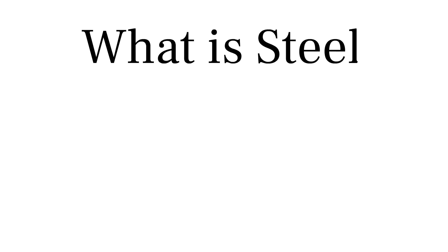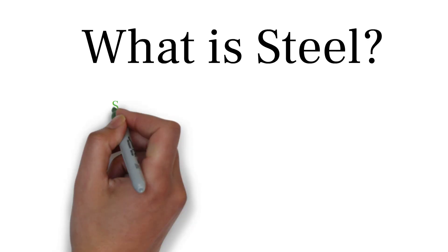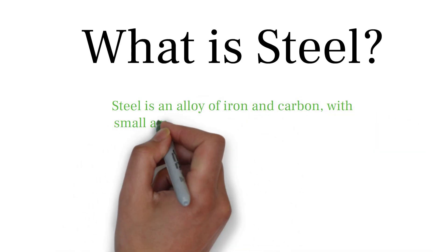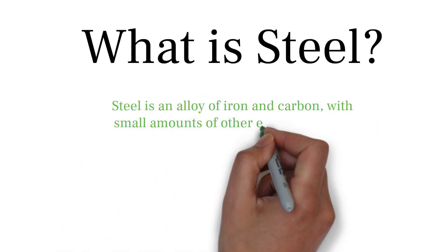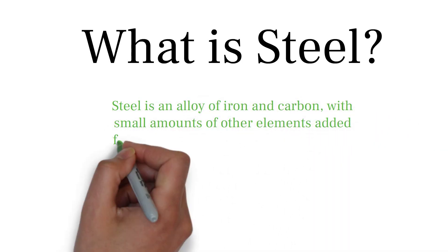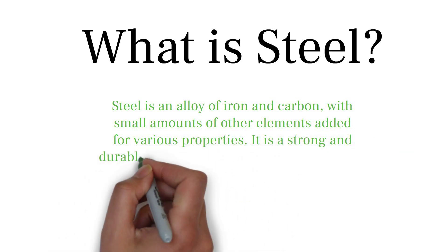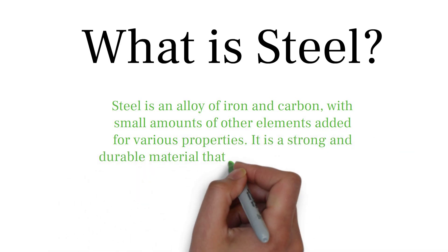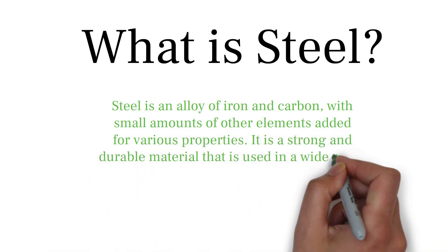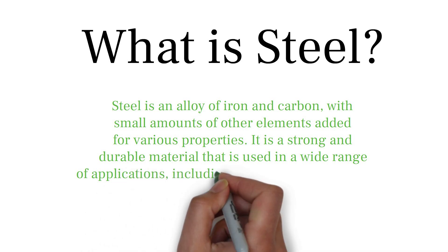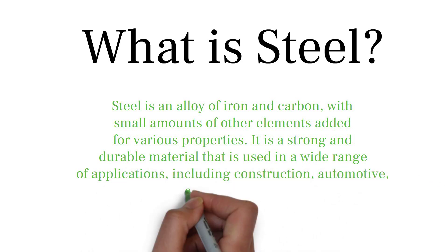To start off today's video, let's define what steel actually is. Steel is an alloy of iron and carbon, with small amounts of other elements added for various properties. It is a strong and durable material that is used in a wide variety of applications, including construction, automotive and machinery.